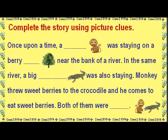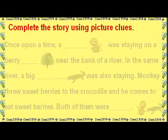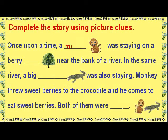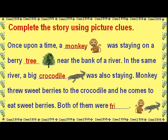Story using picture clues: Once upon a time a monkey was staying on a berry tree near the bank of a river. In the same river, a big crocodile was also staying. The monkey threw sweet berries to the crocodile, and both of them became friends.